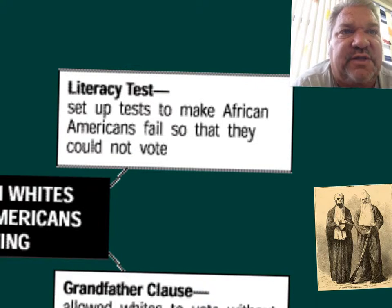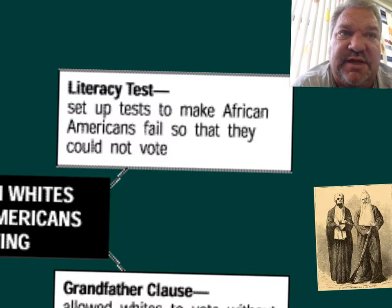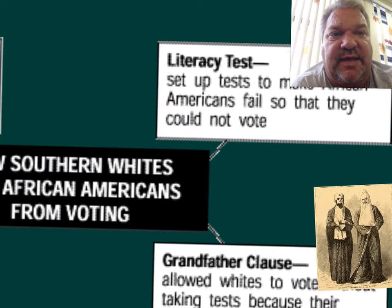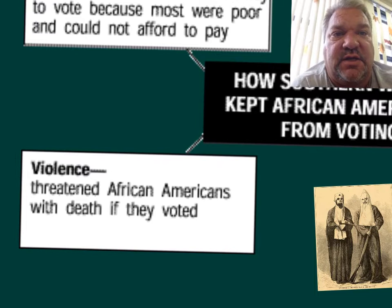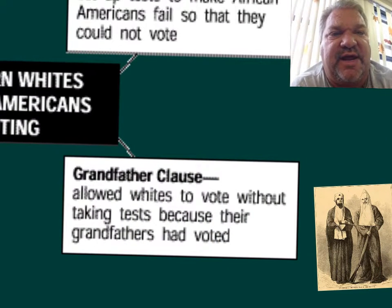There was only one problem with the literacy test. There were also a lot of poor whites who didn't go to school, so a lot of poor whites couldn't read either and couldn't vote. They wanted poor whites to be able to vote, but not African Americans. So they had to find a way to let poor illiterate whites vote without letting African Americans vote. They came up with something very ingenious — the Grandfather Clause.